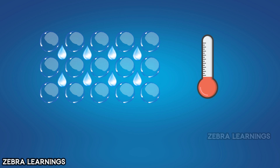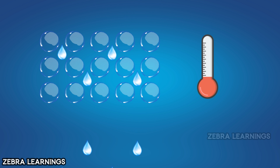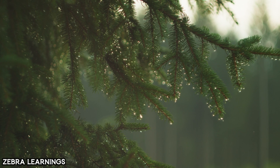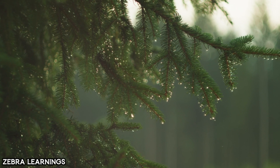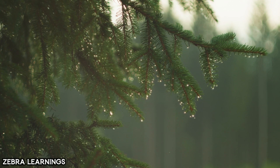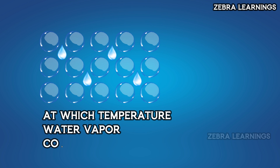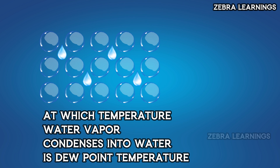When the air temperature decreases, the air molecules compress, and because there is not enough space to store the water vapor, it condenses into water. We can see this water vapor condensing in many places. The dew point temperature is the calculated temperature at which water vapor condenses out of the air.